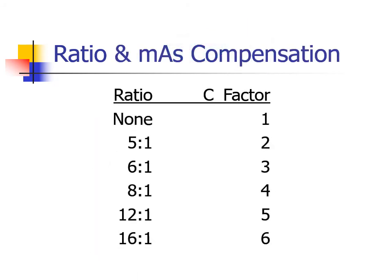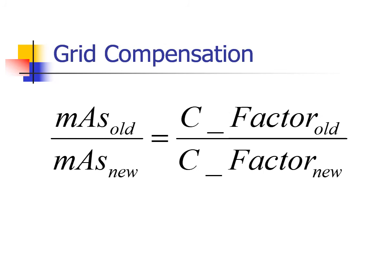Here is a table of common grid compensating factors. If you were performing a view that required three MAS non-grid, and you opted to perform it using a twelve-to-one grid, you would need to raise the MAS to 15 to maintain the same amount of radiation measured at the image receptor. This formula can be used to compensate from one grid to another. It might be used to compensate a technique that works in a table bucky that uses a twelve-to-one grid, to a portable technique where a six-to-one grid might be more appropriate.